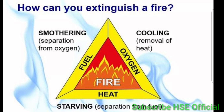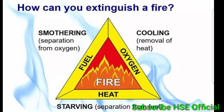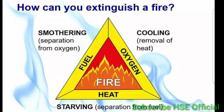When you smother by cutting off the supply of oxygen, you can extinguish the fire from the external side and internal side. When you remove the oxygen, you can easily put out the fire.